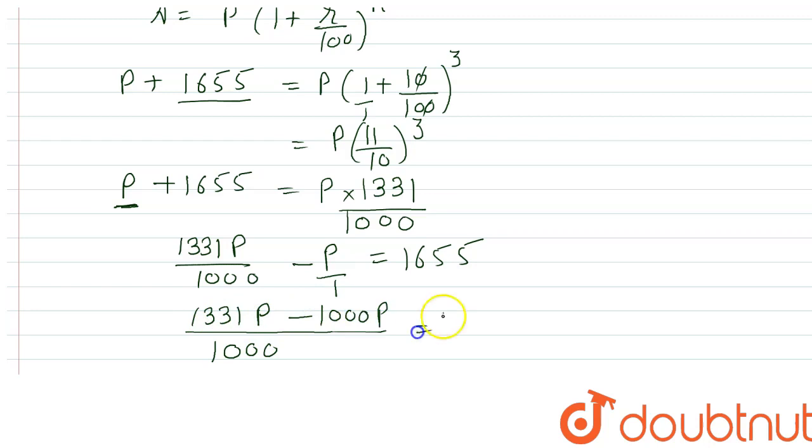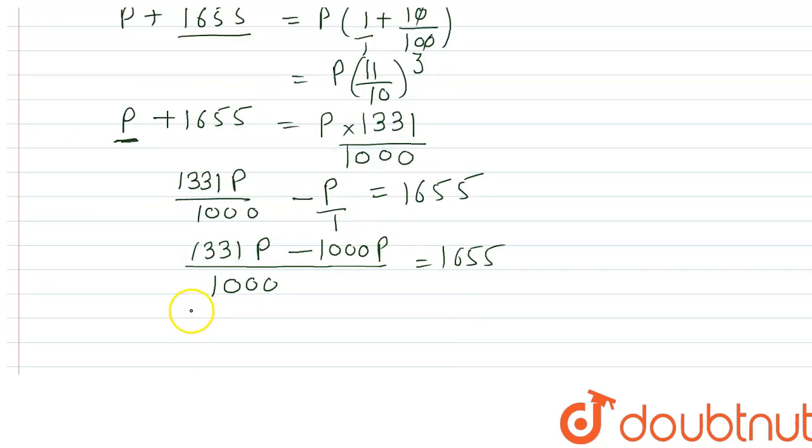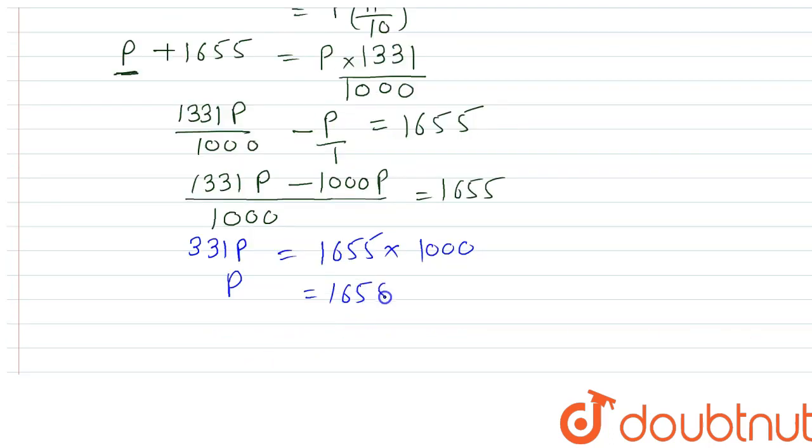1331P minus 1000P equals 1655 times 1000. 331P equals 1655 times 1000. So P equals (1655 times 1000) divided by 331.